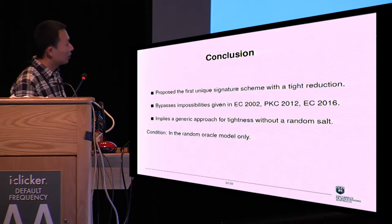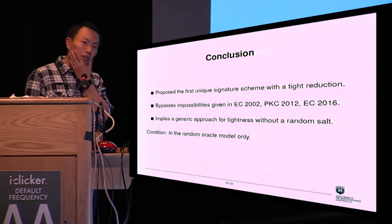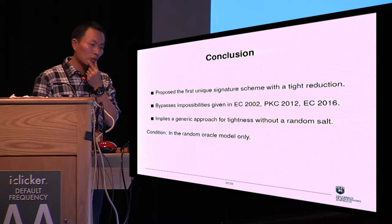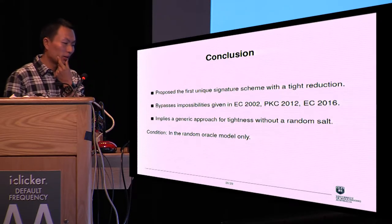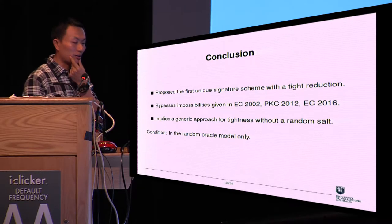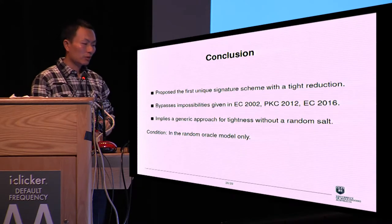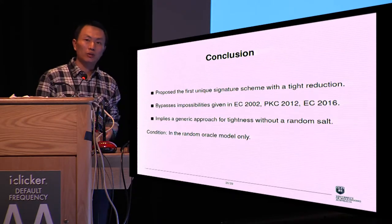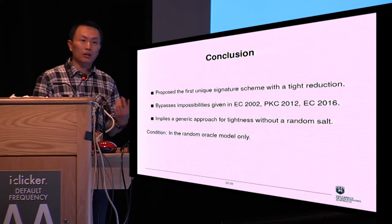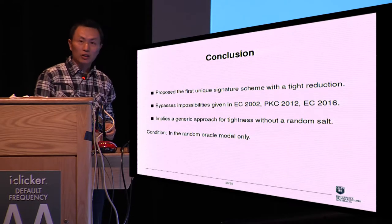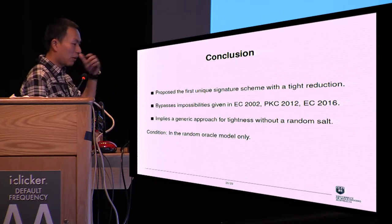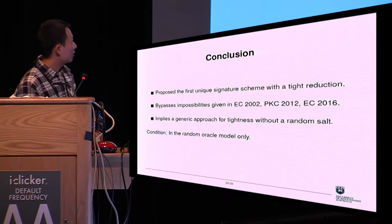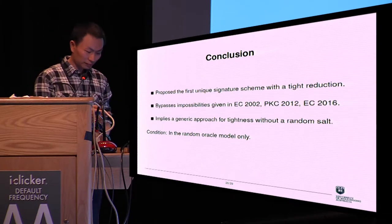In conclusion, we propose the first unique signature scheme with a tight reduction. This work bypasses the impossibility results given in those three prior works. This construction also implies a generic approach for tight reduction without a random nonce in signature generation. The condition is that our scheme construction and this transformation must be in the random oracle model.